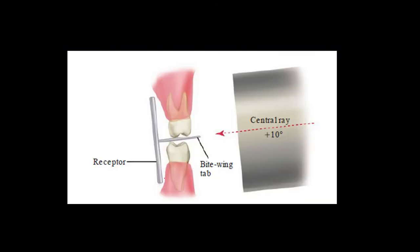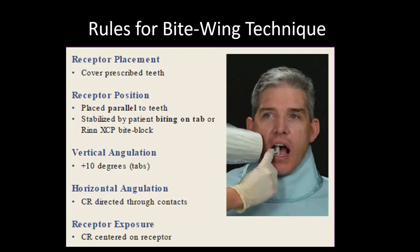The film is slightly bent when kept parallel to the maxillary teeth, hence the central ray is directed at plus 10 degrees vertical angulation. The rules for bitwing technique: receptor placement should cover the prescribed teeth and be positioned parallel to the teeth, stabilized by the patient biting on a tab or bite block. Vertical angulation is plus 10 degrees; horizontal angulation is zero, directed through the contact points; and the central ray should be centered on the receptor.